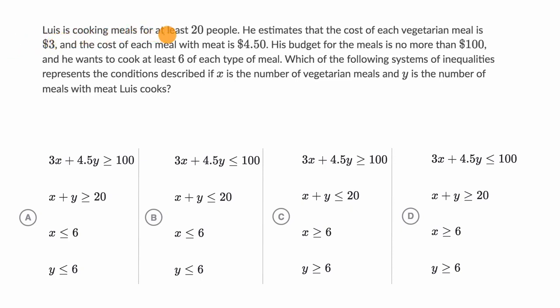We're told Luis is cooking meals for at least 20 people. He estimates that the cost of each vegetarian meal is $3, and the cost of each meal with meat is $4.50. His budget for the meals is no more than $100, and he wants to cook at least six of each type of meal.